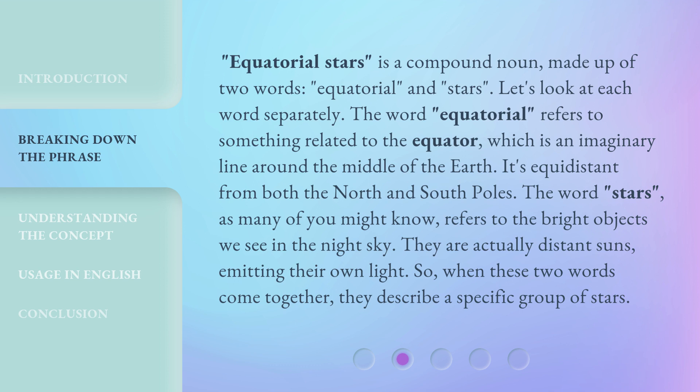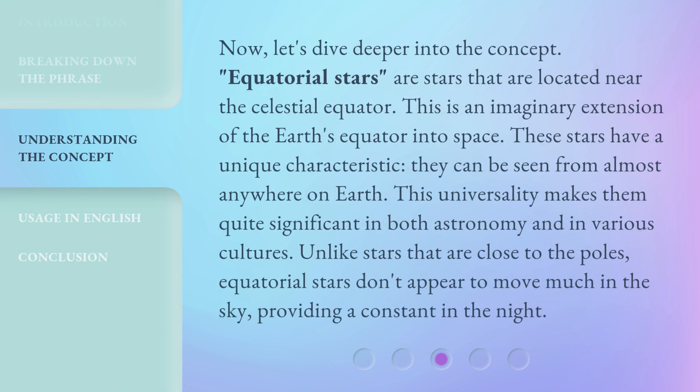So, when these two words come together, they describe a specific group of stars. Equatorial stars are stars that are located near the celestial equator. This is an imaginary extension of the Earth's equator into space.